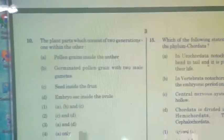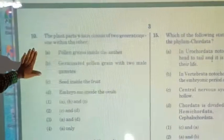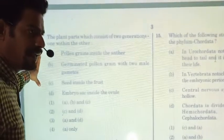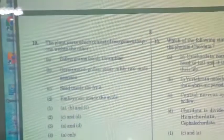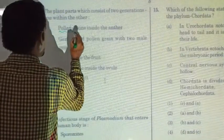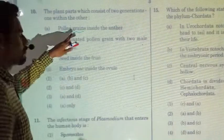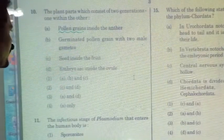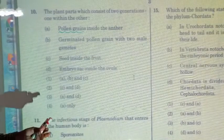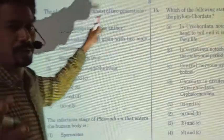Question number ten is about plant parts that consist of two generations, one within another. Pollen grains represent male gametophytes — a haploid structure with a maximum of three cells. When considering evolutionary trends from primitive to advanced plants, primitive plants like algae have elaborate multicellular, independent photosynthetic green gametophytes.